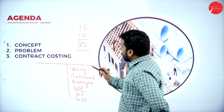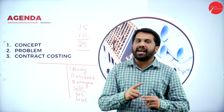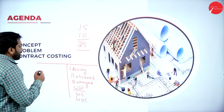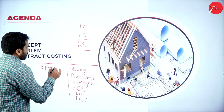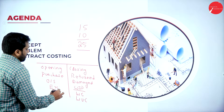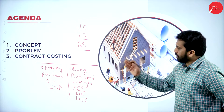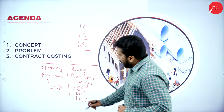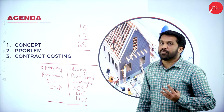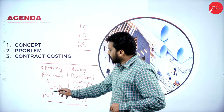Now, all the closing balances, anything which is returned, and any damages — these go on the credit side. Under work in progress, we have work certified and work uncertified. Coming to the debit side: all the opening balances, all the purchases, any outstanding, and any expenses come under the debit side of your statement. Hope you are clear. Now you have to see which side is more. If your debit side is more and credit side is less, it will be notional loss — not net profit or net loss. If credit side is more and debit side is less, we call it notional profit.